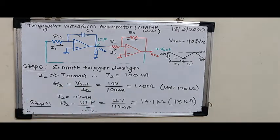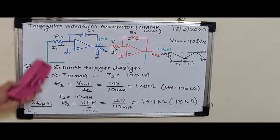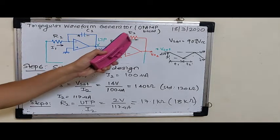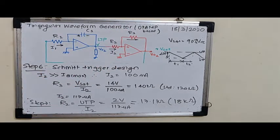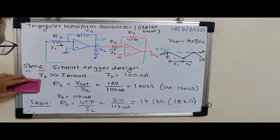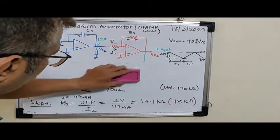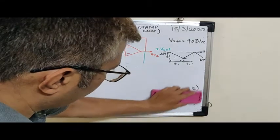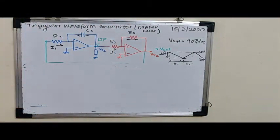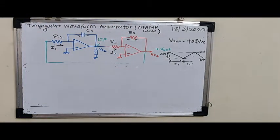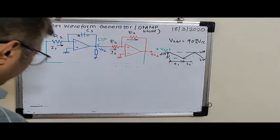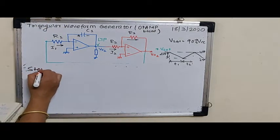That actually finishes the calculation of R1, C1, R2 and R3. Now one most important step which people normally don't care about but is important is the minimum slew rate that is required by the operational amplifier. And that is the last step of the design.